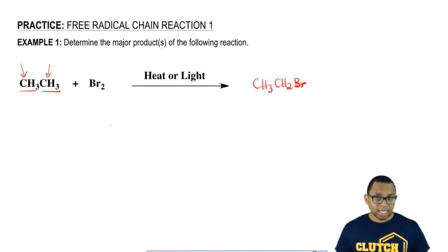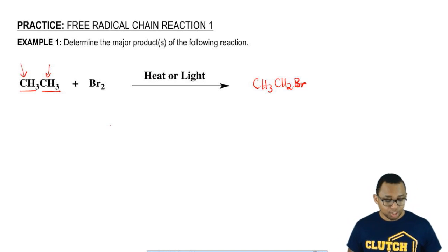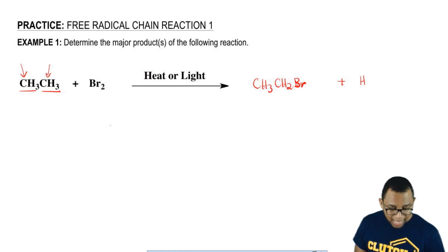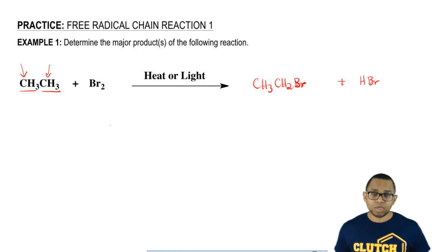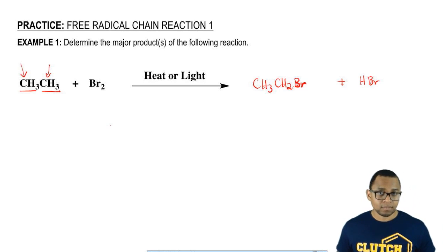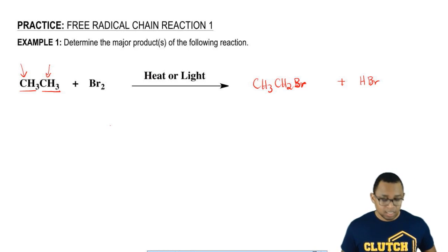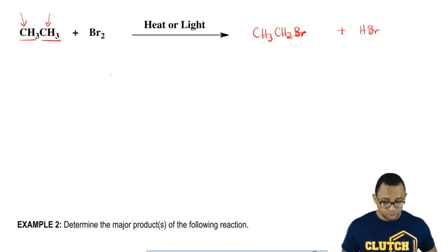In this reaction, we replace one hydrogen with a halogen. That H that got replaced combines with the extra Br that's hanging around — technically those would be your two products at the very end. Remember, monohalogenation: we're looking for the different types of hydrogens present and replacing them with a halogen.